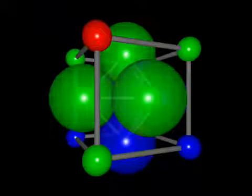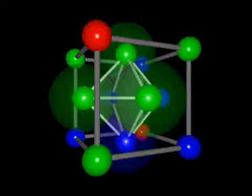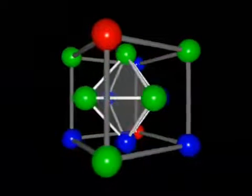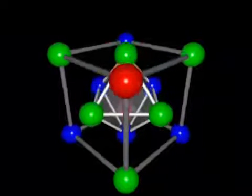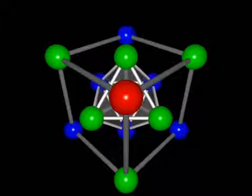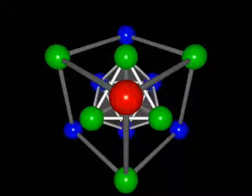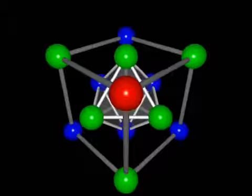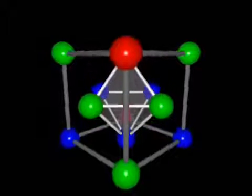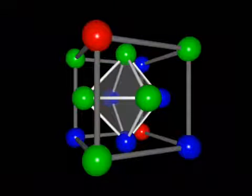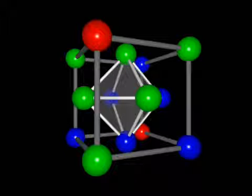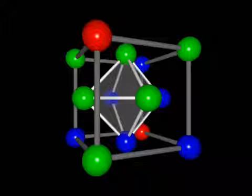In all subsequent discussions, we will represent octahedral holes with partially transparent polyhedra as shown here. Despite the name, it takes six atoms, not eight, to define an octahedron. The term octahedron is derived from the fact that such a polyhedron has eight sides. The center octahedral hole is the only one that lies entirely inside the cell shown here.